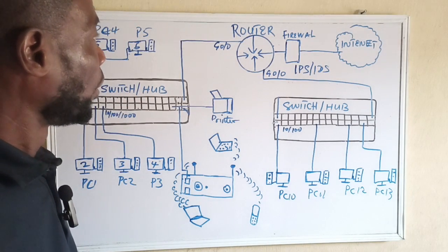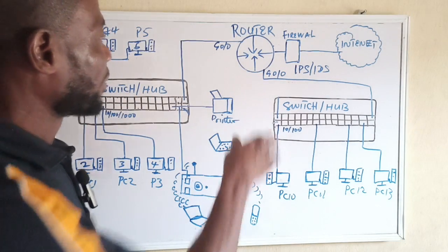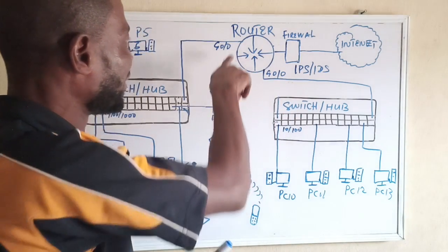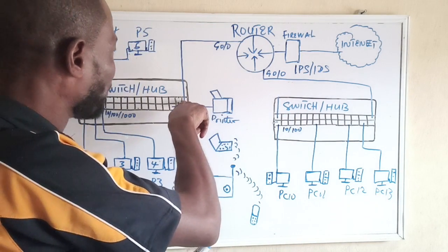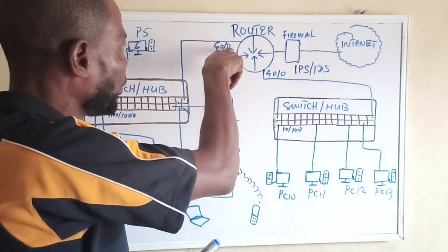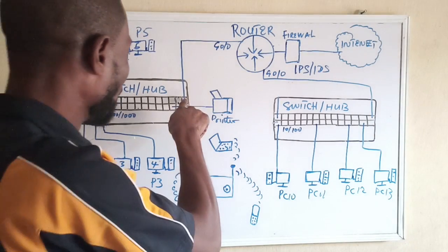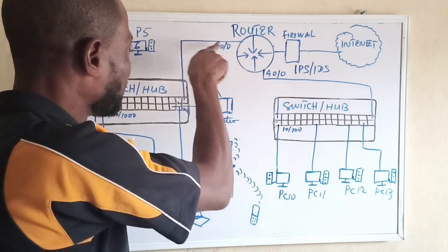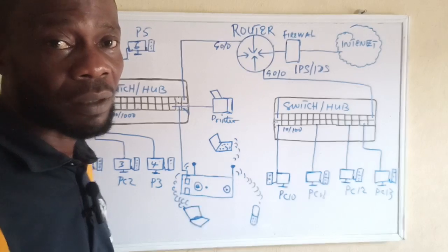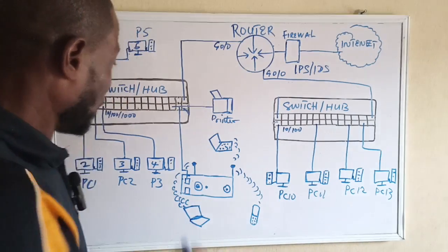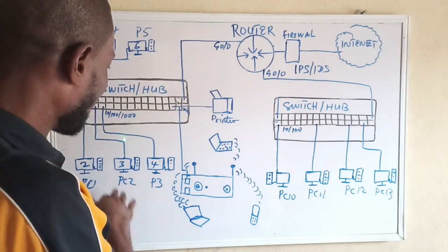You can see another LAN here with a gigabit uplink to the router. From here there's a speed of one gigabit per second or more. This LAN can operate at 100 megabits per second, while the uplink can operate at higher speeds.